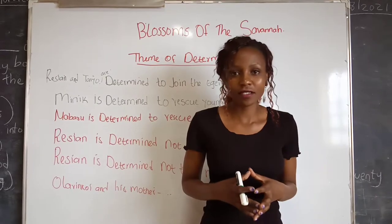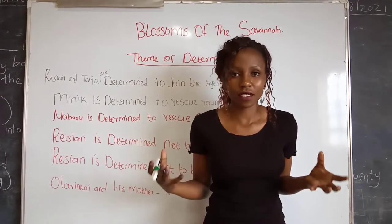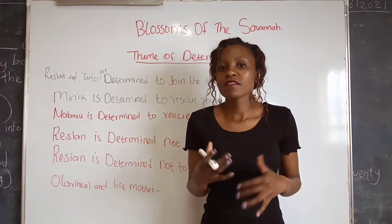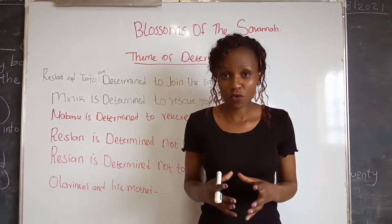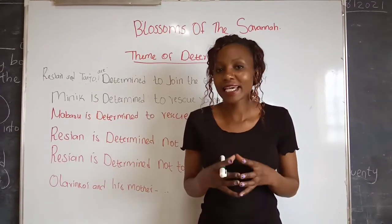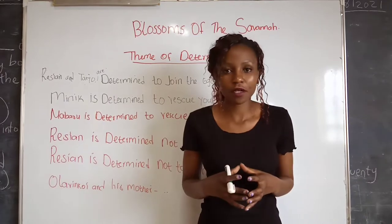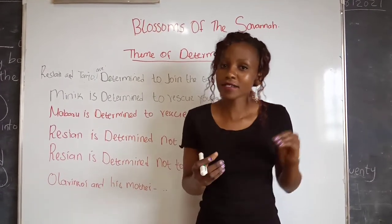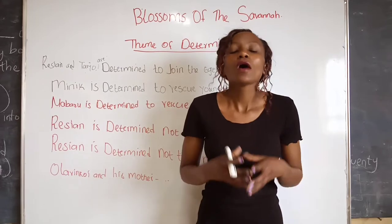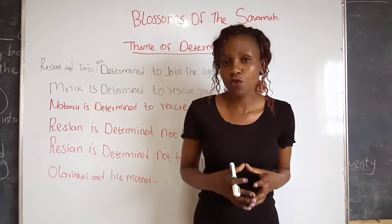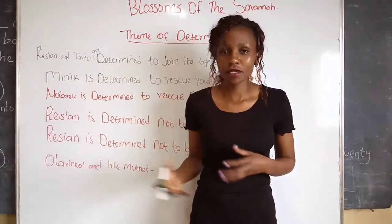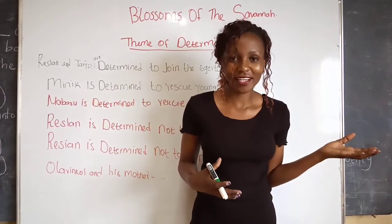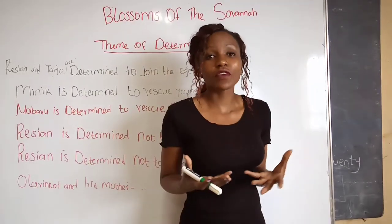The next point is that Olarinkoi and his mother are determined to have Resian circumcised. In the book, we are told no amount of persuasion was likely to make them change their mind. That is why Resian and Nabaru had to find a way to escape in order to avoid being circumcised before marrying Olarinkoi.